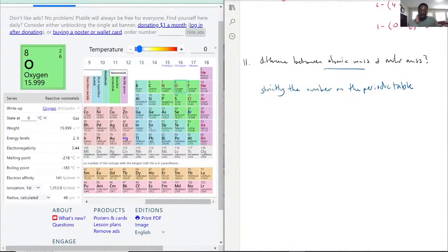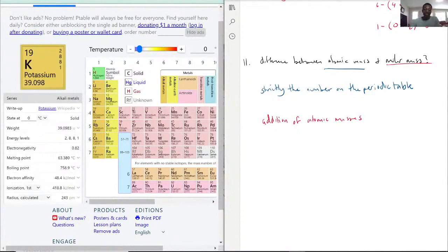Molar mass now is the addition of atomic masses. Now what do I mean by that? Sometimes you are just adding just one thing. If I said, what is the molar mass of potassium? Just potassium. Potassium in nature just shows by a K solid. That is its form.